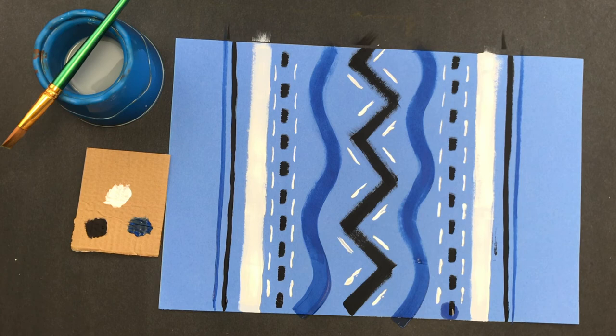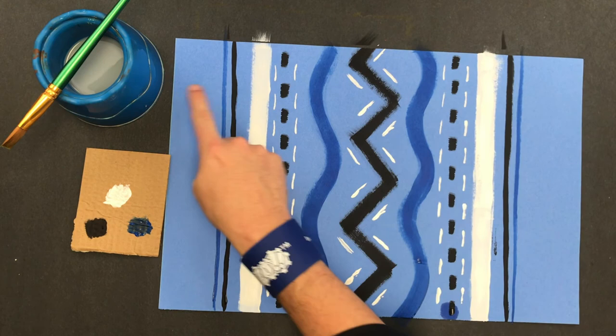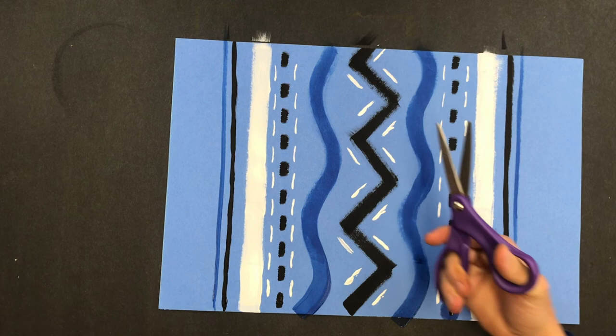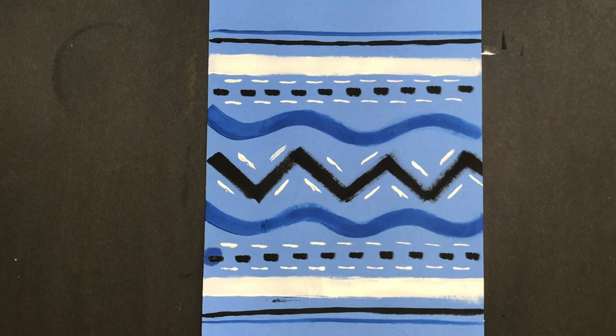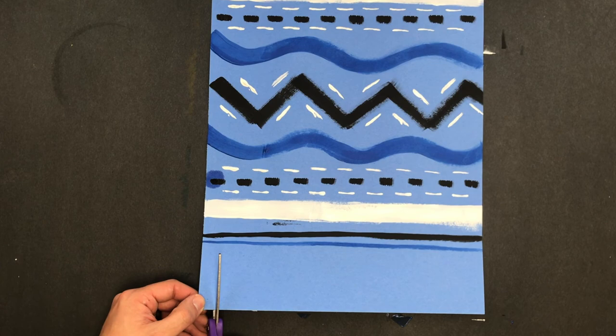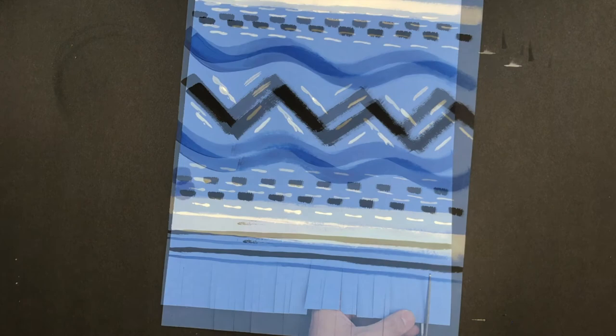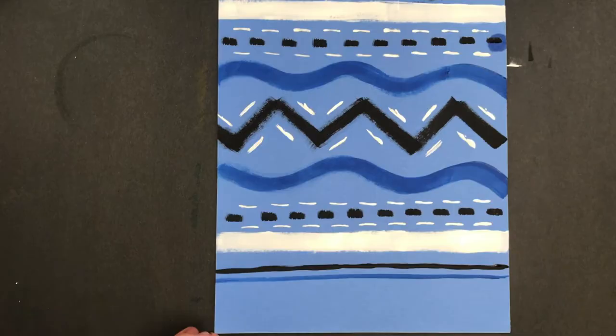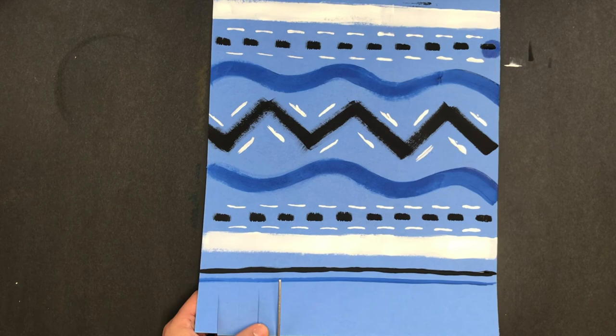Now all I have to do is use my scissors and I'm going to cut all the way up on this side and on this side. Now I've got my scissors. Okay, so what I'm going to do is I'm going to turn my paper and I'm going to cut on either side. Okay, I'm going to do the other side. And there you have it.